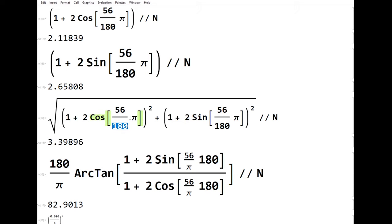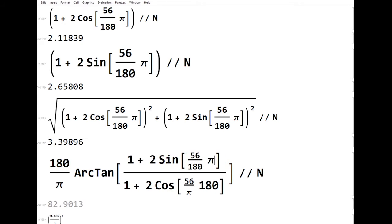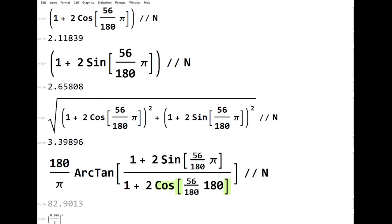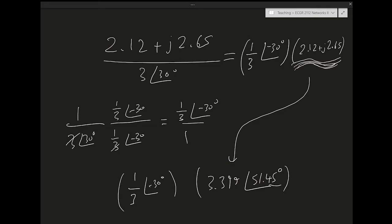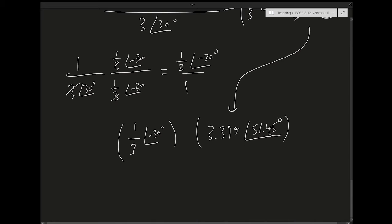Now I find the angle, which is arctan(imaginary part / real part). The angle result is in radians, and I convert to degrees by multiplying by 180/π. Doing this calculation gives 51.4465°. So I've converted 2.12 + j2.65 back into polar form: 3.399∠51.45°.